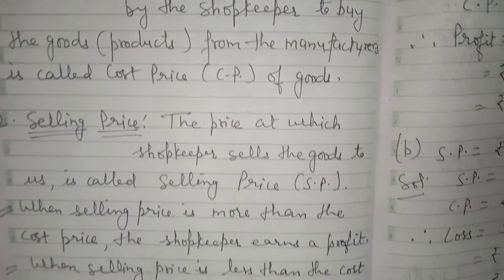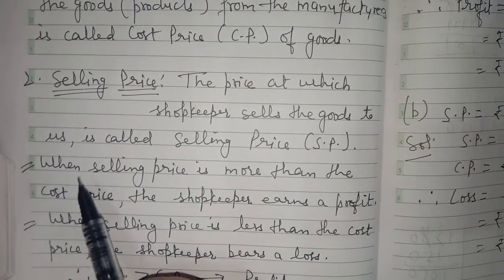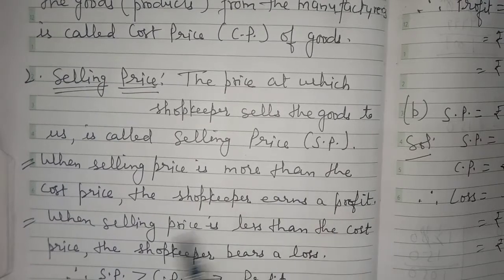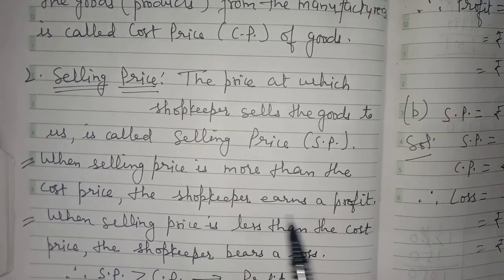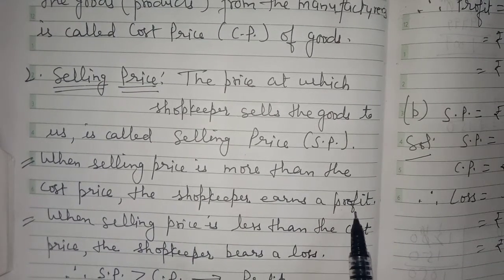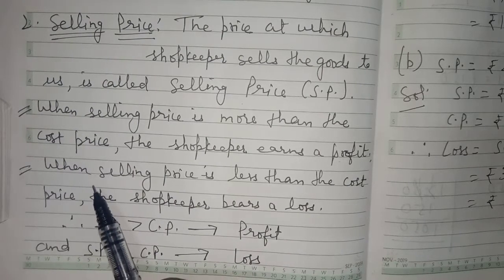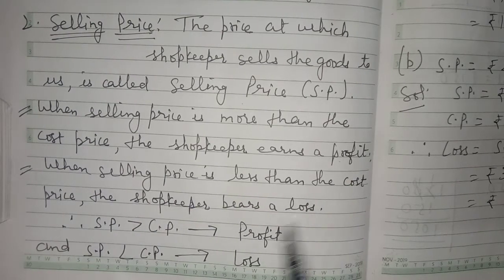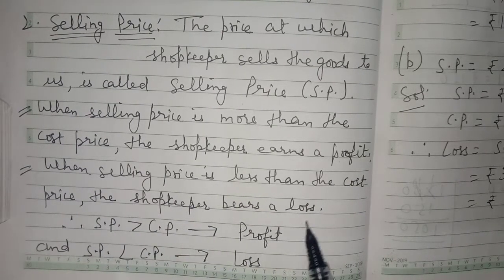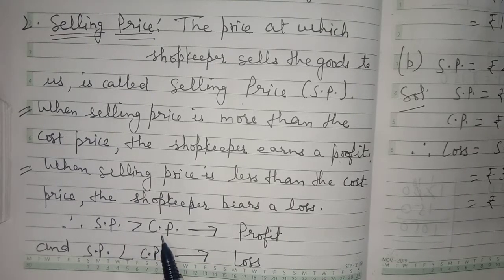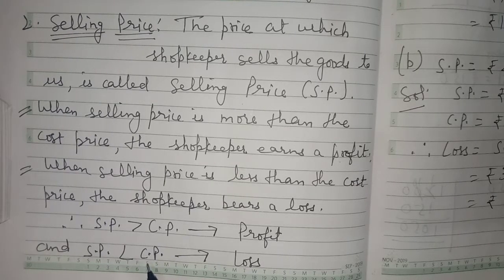There are a few things to keep in mind. When selling price is more than the cost price, the shopkeeper earns a profit. When selling price is less than the cost price, the shopkeeper bears a loss. So when SP is greater than CP, he earns a profit, and if SP is less than CP, he bears a loss.